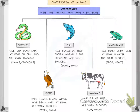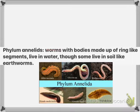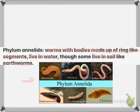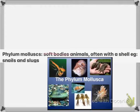Phylum Annelida are worms with bodies made up of ring-like segments; they live in water, although some like earthworms live in soil. Phylum Mollusca have a soft body and often have a shell — mollusks with a shell include snails, and without a shell include slugs.